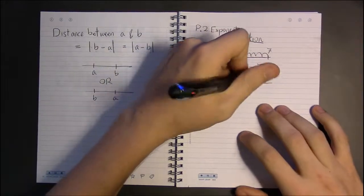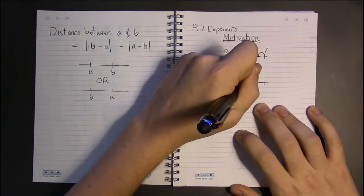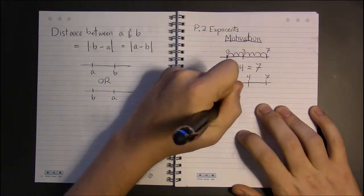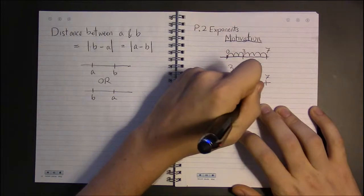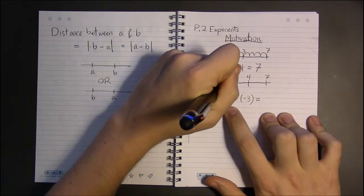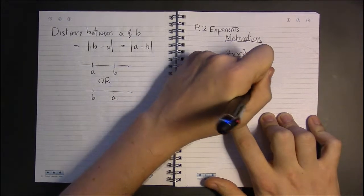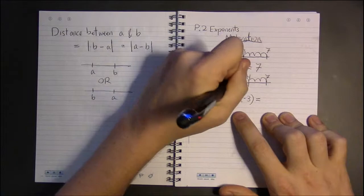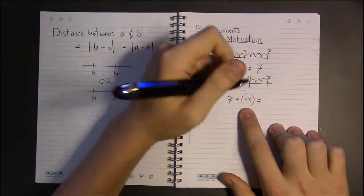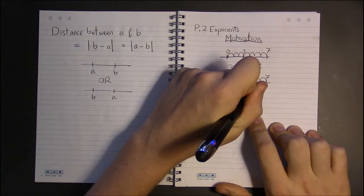Now, things get a little more complicated when signed numbers are involved. Say, 7 plus a minus 3. Well, start at 0, move 7, 2, 3, 4, 5, 6, 7. So, this is the move of 7, and then move left, left because of the negative, 3. 1, 2, 3. This is the negative 3.